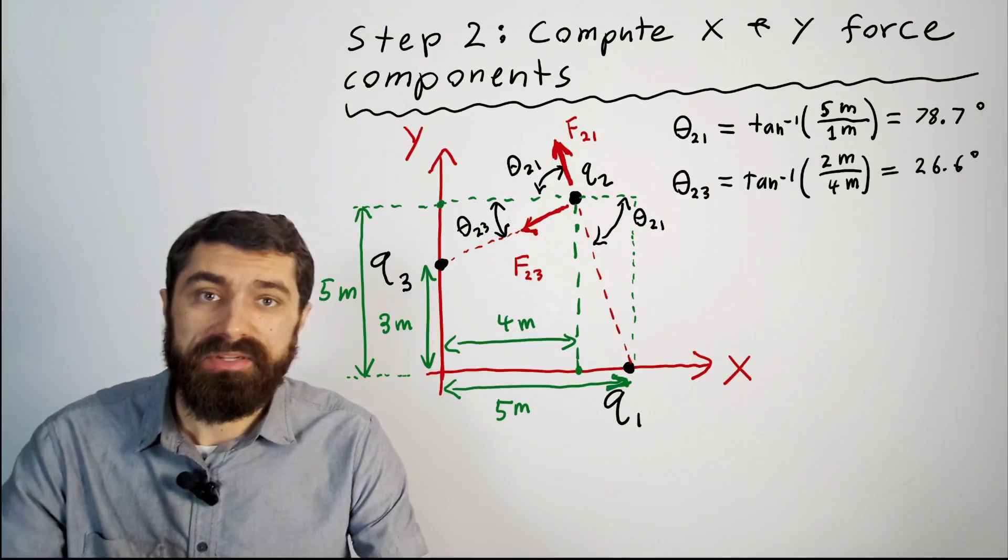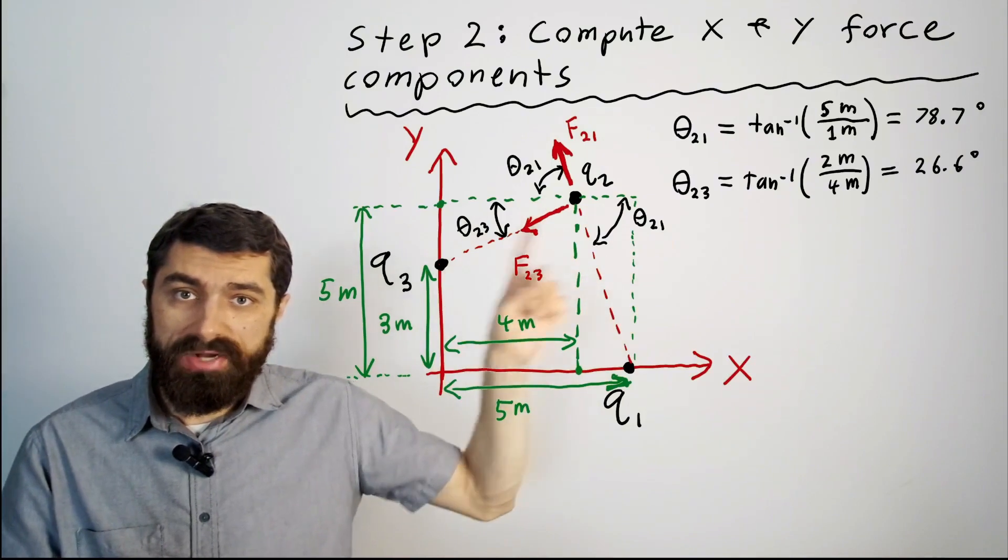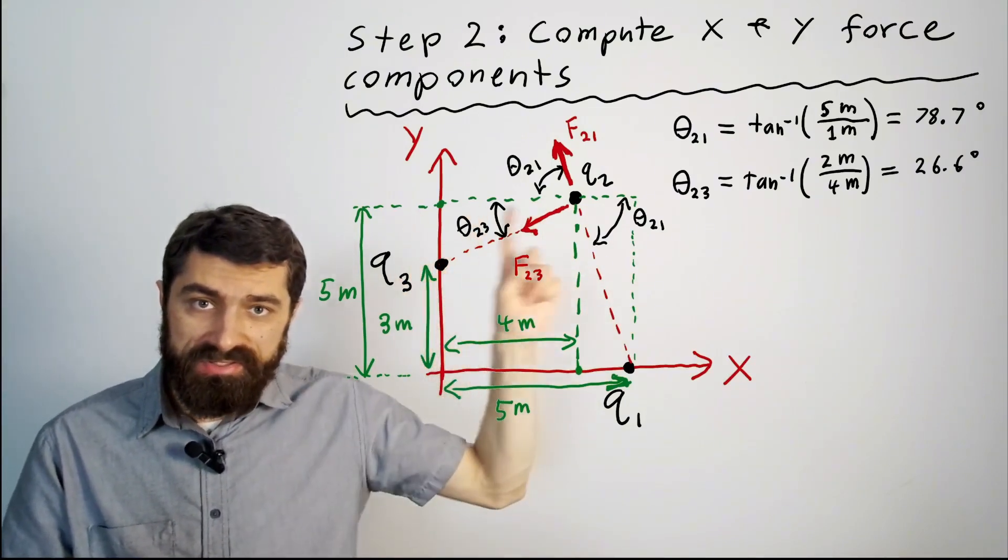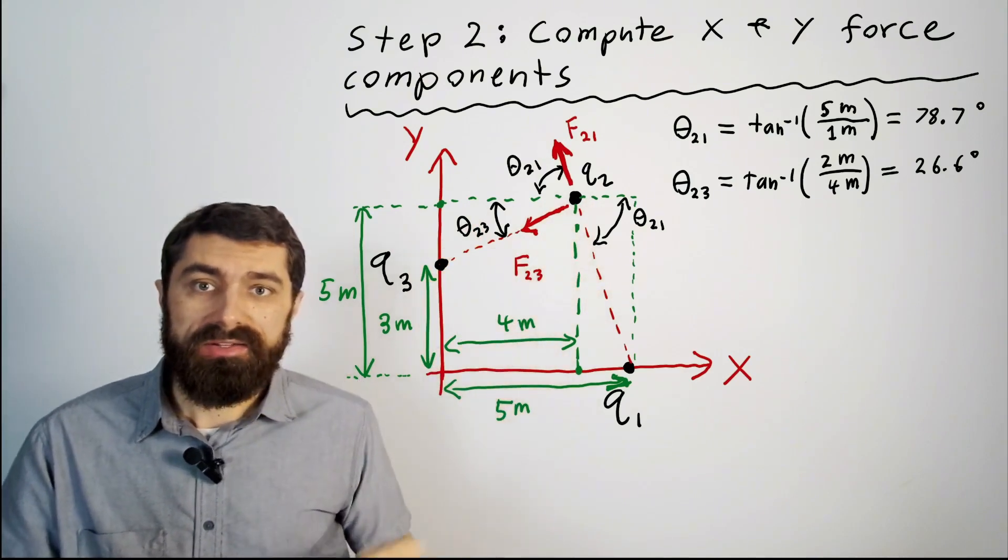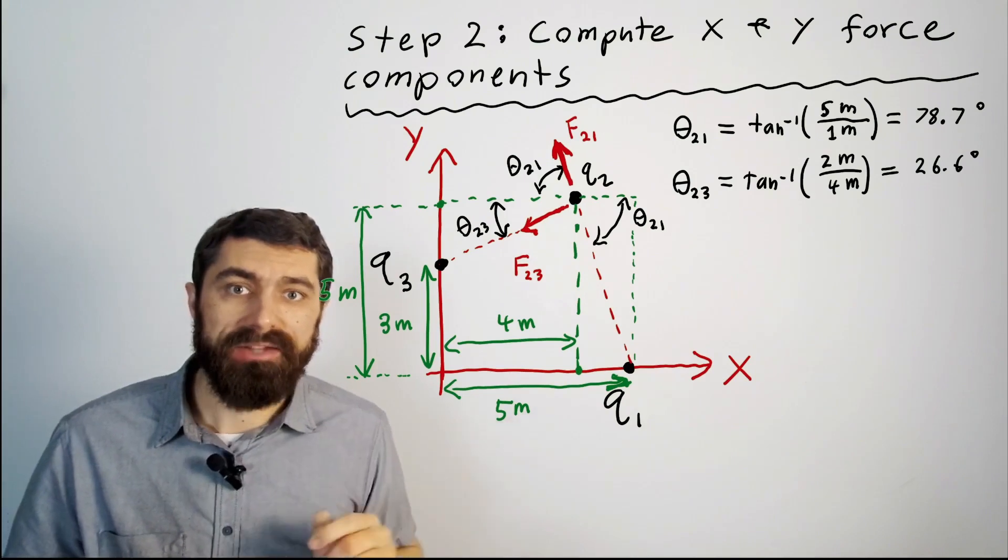And in a very similar manner I can also calculate theta 23 with this triangle over here. This distance here is 2 meters this distance here is 4 meters. I take the inverse tangent of that ratio there and I can calculate the angle.